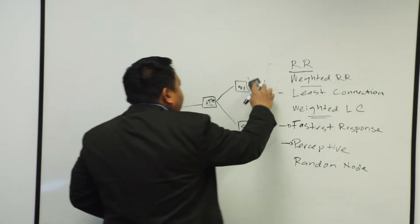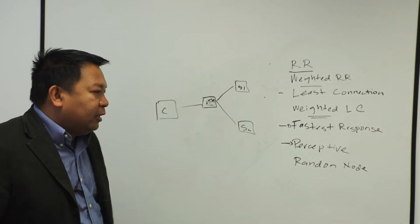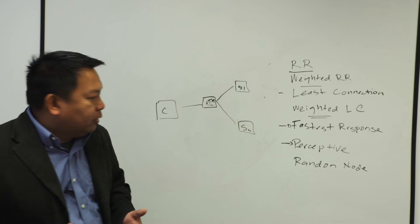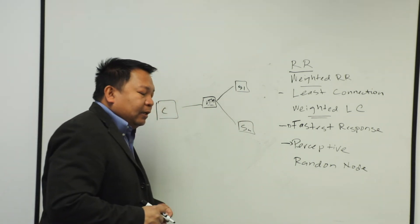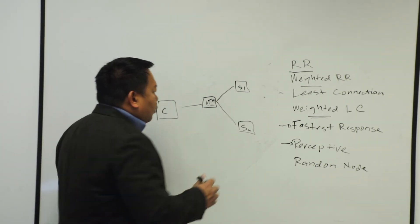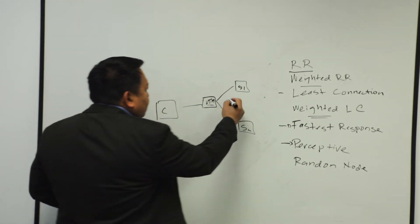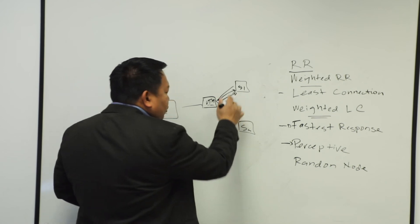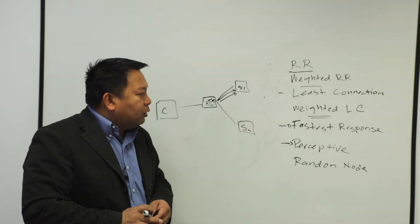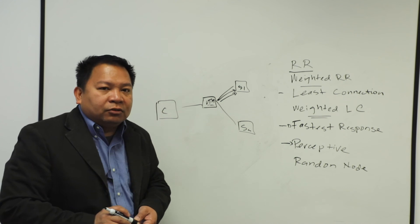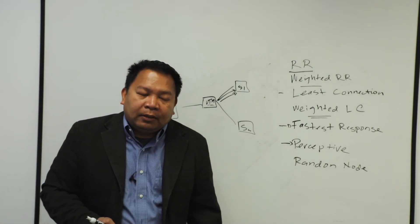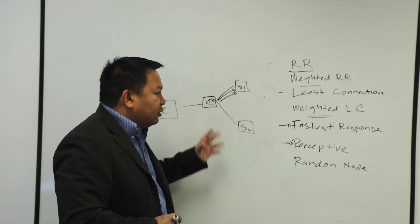And then, we have what we call random node. Random node is an internal algorithm that we have created at Pulse Secure that you cannot determine which server it's going to go. It's just basically random, so maybe two requests are sent to Server 1, and it does not look at based on response time or least connection reasons. It just sends it accordingly, it doesn't matter if it's a fast server or a slow server.